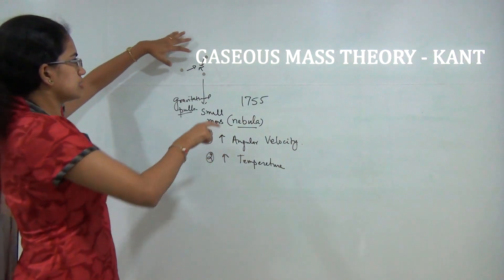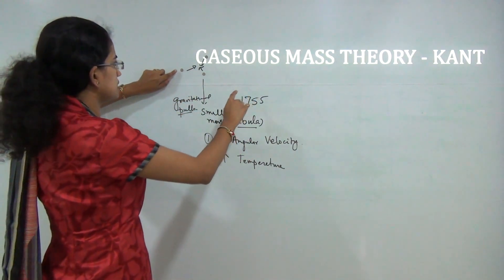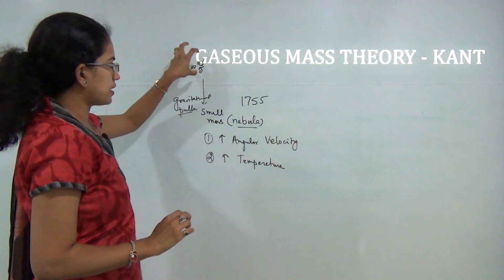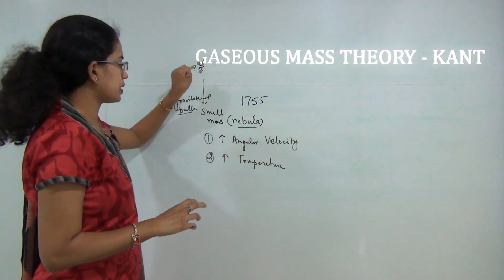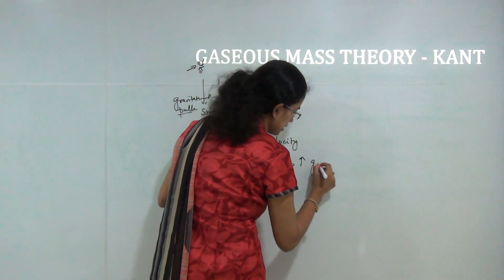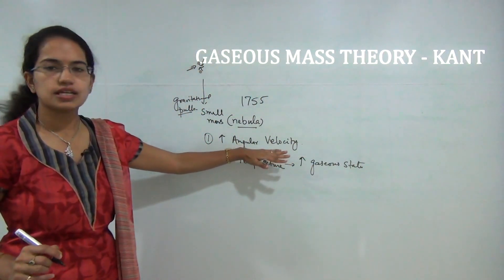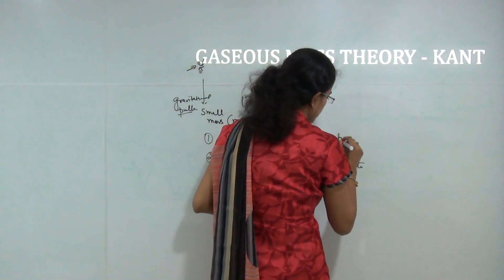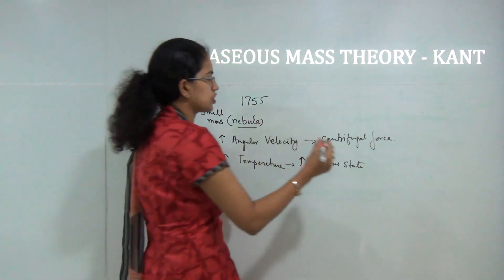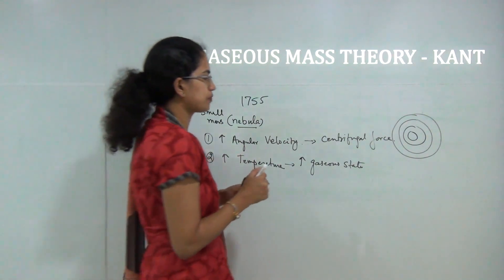To demonstrate this, there are various small masses present in the atmosphere known as nebulae — small cold masses. Due to gravitational pull they try to come close to one another, as you can see here. As they come closer, there is an increase in angular velocity and an increase in temperature. The increase in temperature leads to a higher gaseous state, and the increase in angular velocity leads to a rise in centrifugal force. This centrifugal force is responsible for generating concentric rings, which would later form the planets.